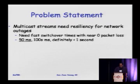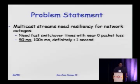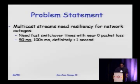Multicast streams need resiliency for network outages — that's the basic problem statement. We need fast switchover times with near zero packet loss. When you ask the video application guys if we can drop a few packets — one in every 100,000 — they say absolutely not because everything goes bonkers. So we're going to try to shoot for the 50 to 100 millisecond range and see if we can solve it with this solution.